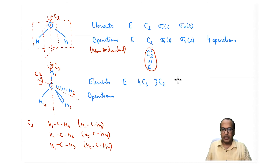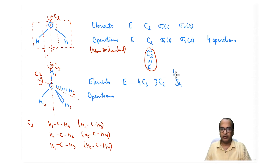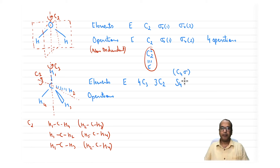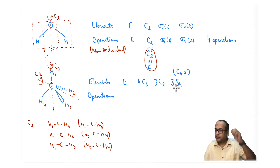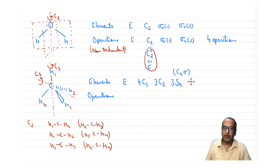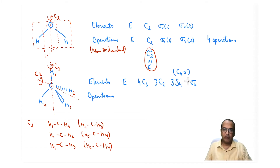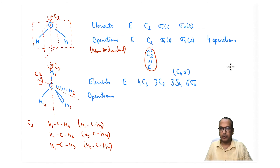We also have S4 axes. S4 is the combination of C4 followed by a perpendicular sigma. You can work out this operation yourself or discuss it in the interaction session. If there are three C2 axes, there will be three S4 axes present. There are also sigma-d planes — these bisect the H–C–H angles — and there will be six such sigma-d planes.